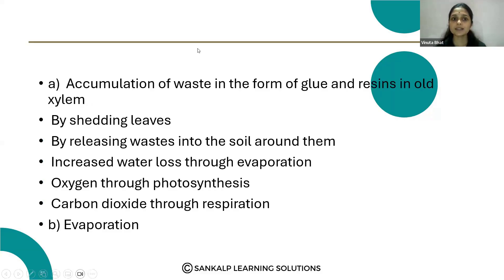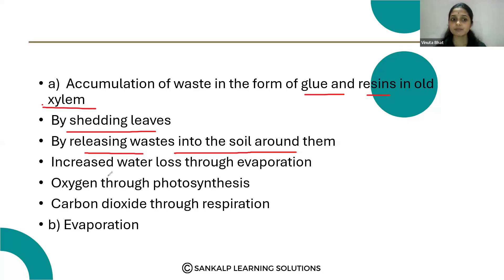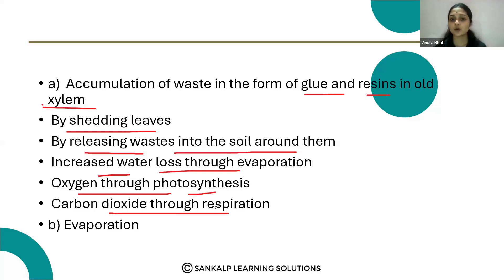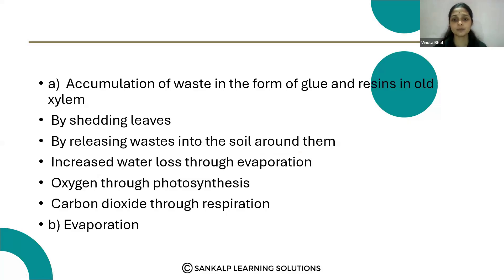Plants use different methods — for example, waste is stored in the form of gum and resins in the old xylem, by shedding leaves, or by releasing waste into the soil around them, increased water loss through evaporation, oxygen through photosynthesis, and carbon dioxide through respiration. These are some methods plants use to remove waste products from their body.